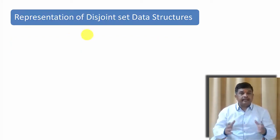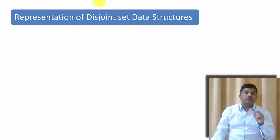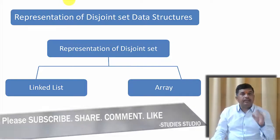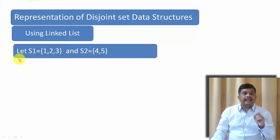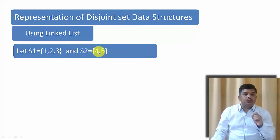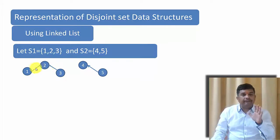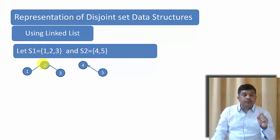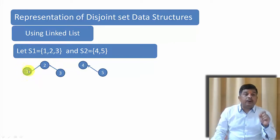The first thing that we learn in any data structure is representation. So let us start about Disjoint Set Data Structure representation. Basically we represent Disjoint Set by two methods — one by linked list and the other one is by using array. Let us use a linked list to find a Disjoint Set. Let us say we are having two sets S1 and S2. S1 contains elements 1, 2, and 3, and S2 contains 4 and 5. This is the graphical representation of this particular set. You can see that this graph seems to be like a tree, but there is a small difference — in a tree or a binary tree, from root node the arrows are pointed towards the child, but here from the child node the arrows are pointed towards the root node.